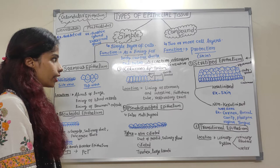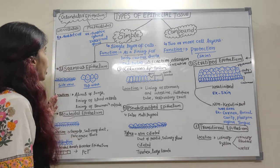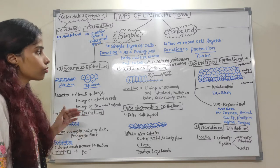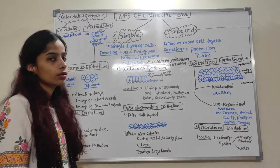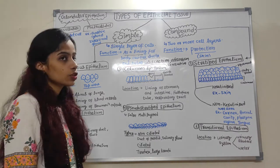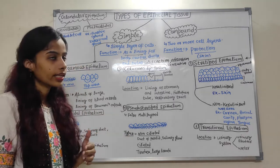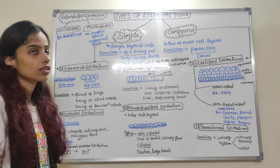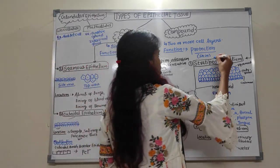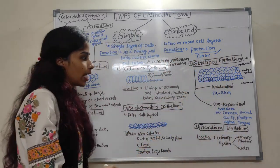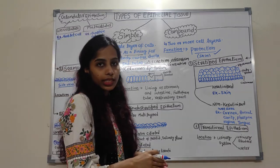There are modifications in cuboidal and columnar epithelium where they act as glandular epithelium, which we will discuss later. Now, compound epithelial tissue is defined as having two or more cell layers, and its function is protection — as seen in skin. It is further divided into two types: stratified epithelium and transitional epithelium.